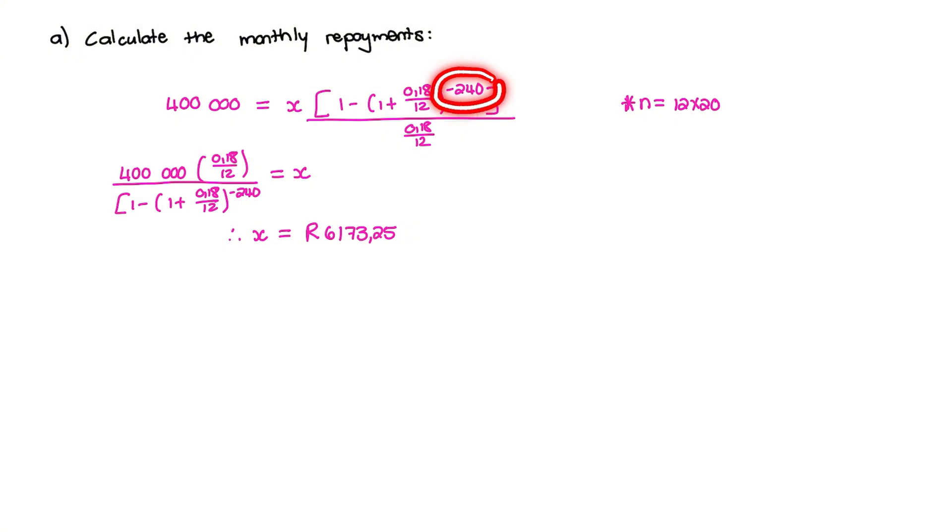The P value is 400,000 Rand. And the reason why we have 240 here is because we are making monthly payments over a period of 20 years. Now, a common mistake is that students forget to make it negative 240. And then I hope by now that you are comfortable manipulating the formula and you can use your calculator to do this and then solve for X. So please use your calculator now and check whether or not you can get to 6,173 Rand and 25 cents.